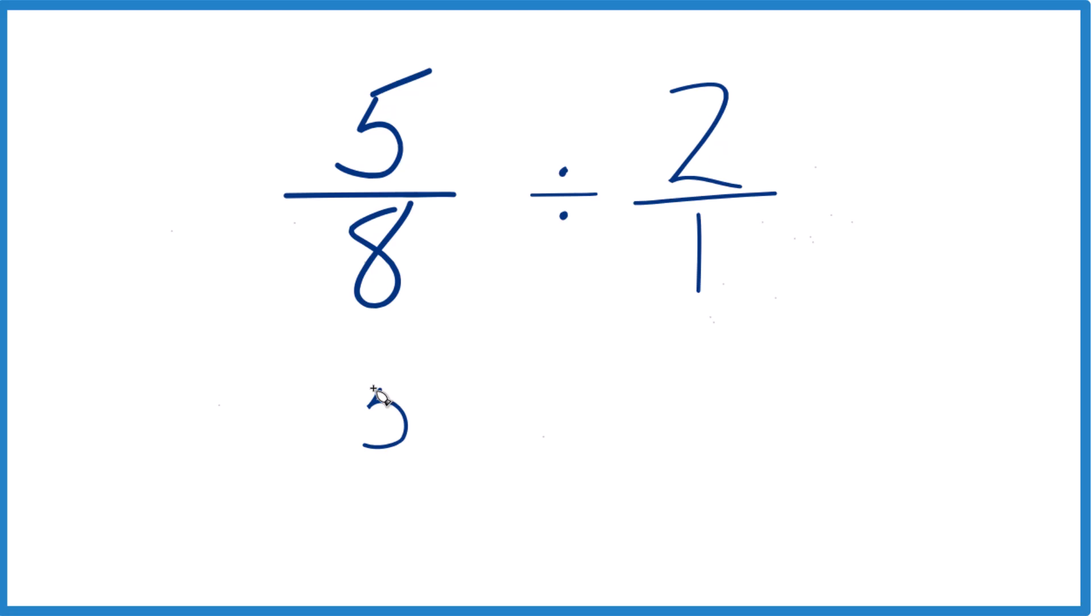Next, we're going to take the 5 eighths, and instead of division, we're going to multiply by the reciprocal of 2 over 1.